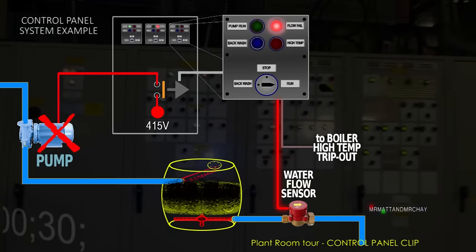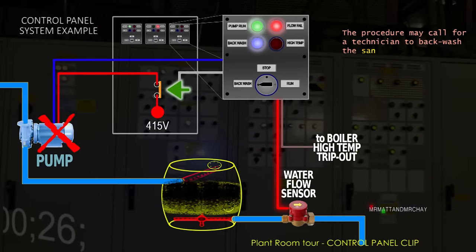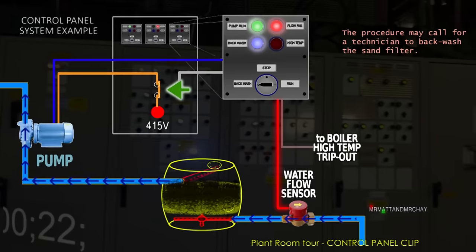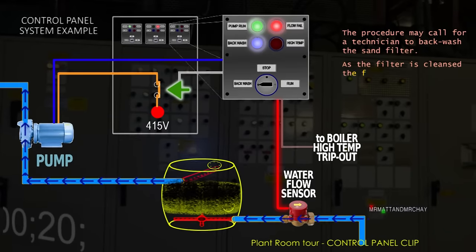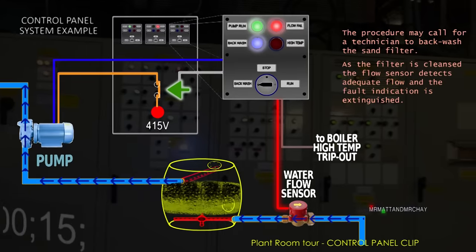The procedure may call for a technician to backwash the sand filter, which could be run by a different pump, but this illustration is just an example. As the filter is cleansed, the flow sensor detects adequate water flow and the fault lamp is extinguished.